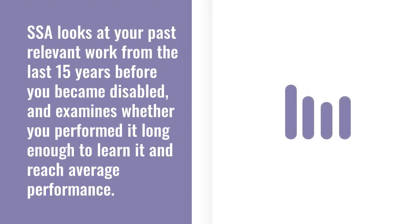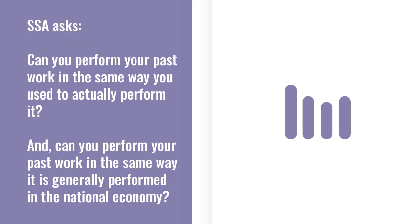Step 4 looks at your work history. Your past relevant work has to have been substantial gainful activity, performed within the last 15 years before you became disabled, and performed long enough to learn it and reach average performance. The SSA looks at two factors: can you perform your past work in the same way you used to actually perform it, and can you perform your past work in the same way it is generally performed in the national economy? If you have the physical and mental capacity to perform any of your past relevant work, you are found to be not disabled.